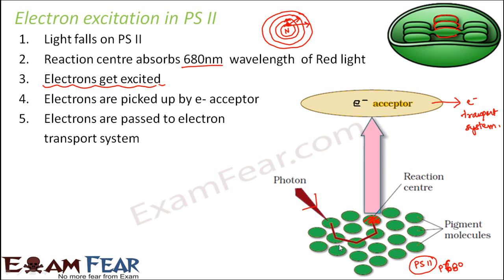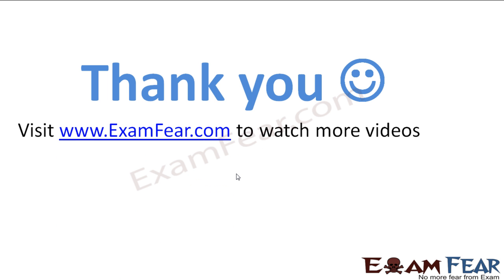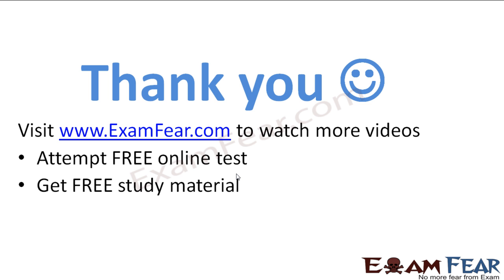So the electron excitation part is clear. Light falls on PS2, the electrons get excited to higher energy levels, they are picked up by the primary acceptor, and then passed to the electron transport system. The question of what happens in the electron transport system will be addressed next. Please visit www.examfear.com to watch more videos, attempt free online tests, get free study material, and find tutors and mentors. Thank you.